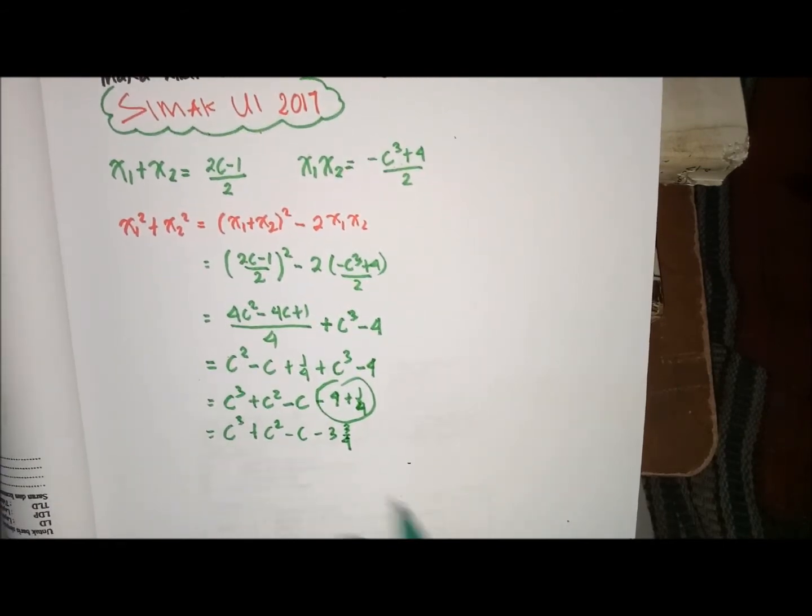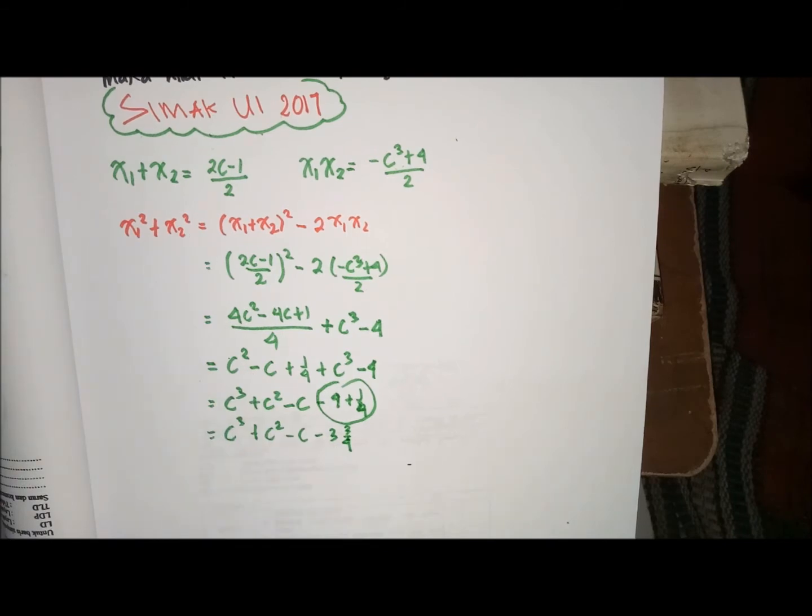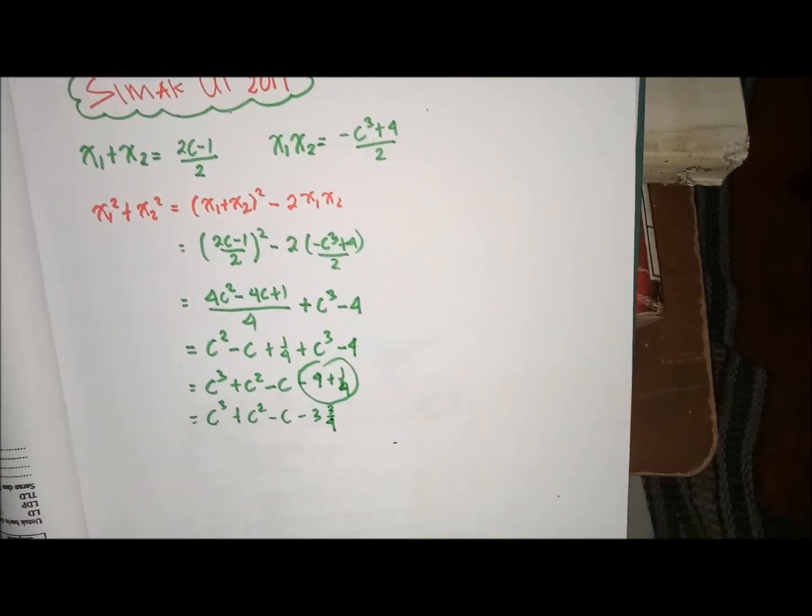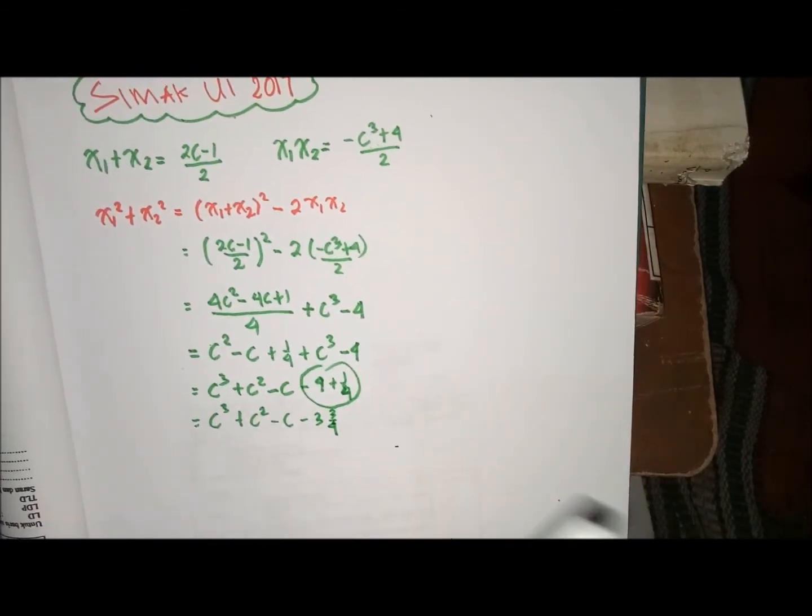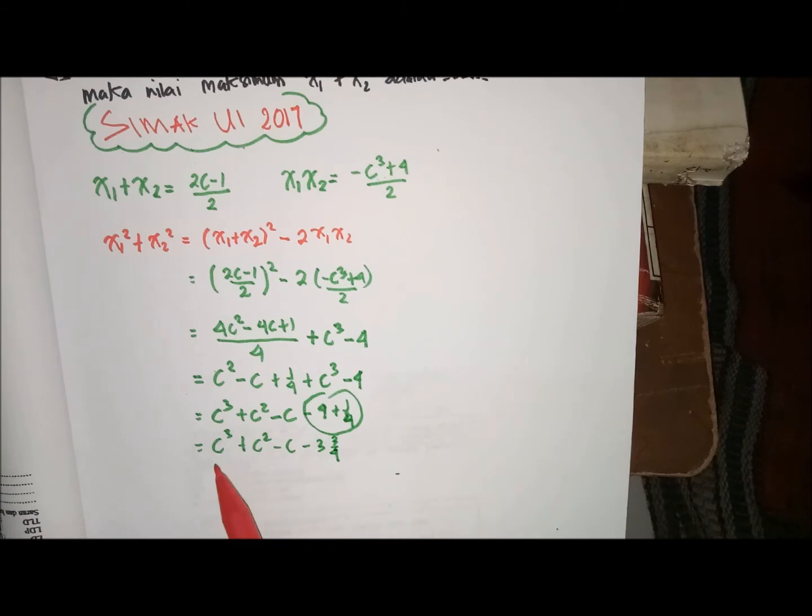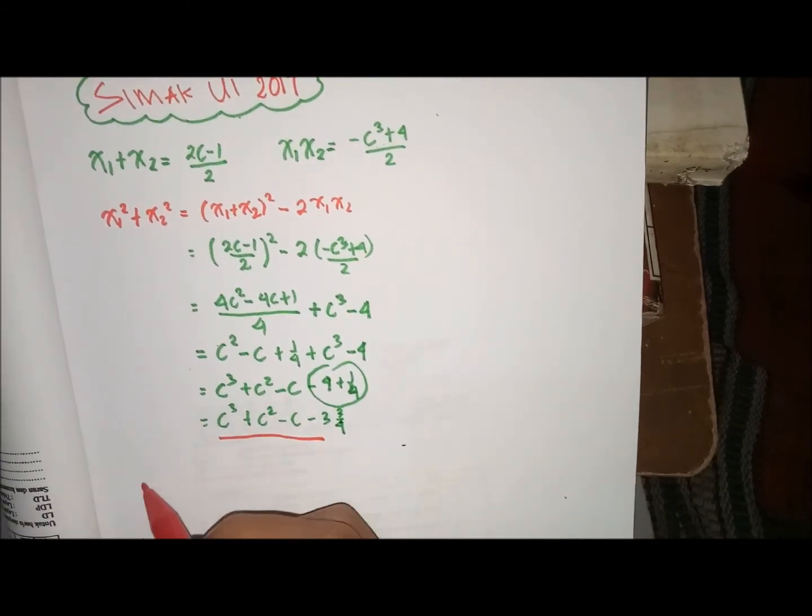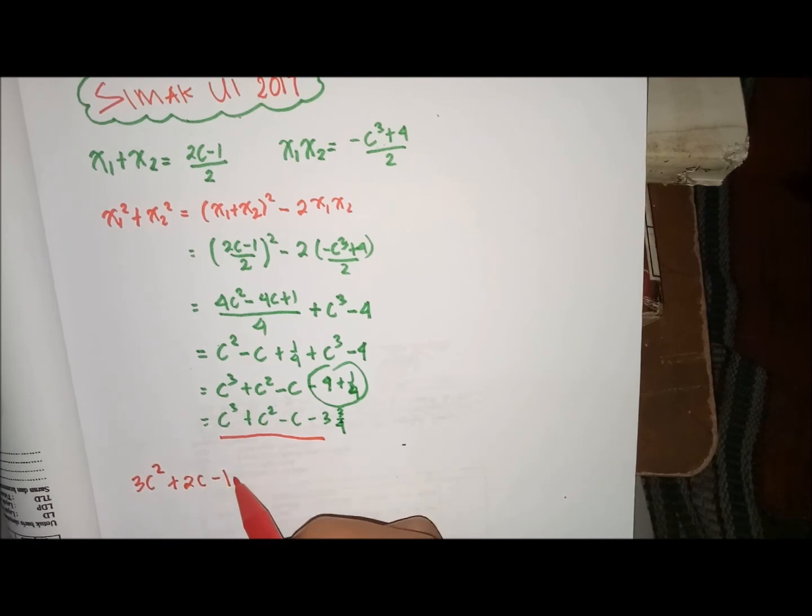Ini adalah fungsi dari X1 kuadrat min X2 kuadrat. Padahal tadi pertanyaannya adalah nilai maksimum, maka kita gunakan turunan. Sehingga turunan dari ini nilainya 0 ketika dia mencapai maksimum. Turunannya ini berarti 3C kuadrat plus 2C min 1 sama dengan 0.